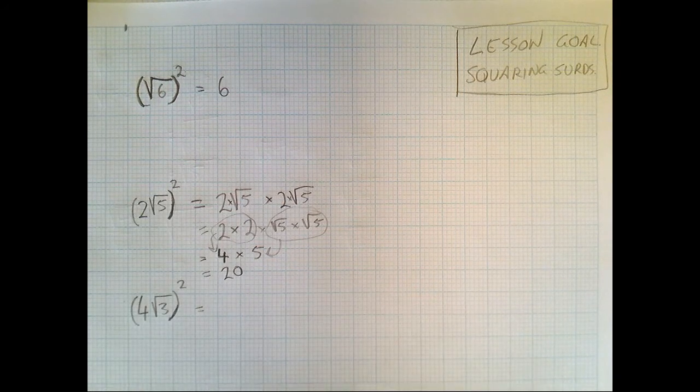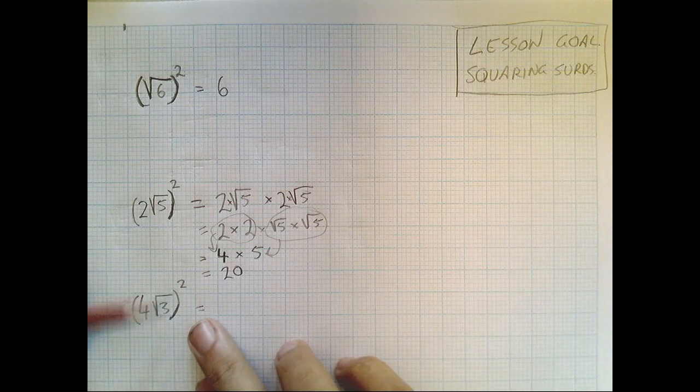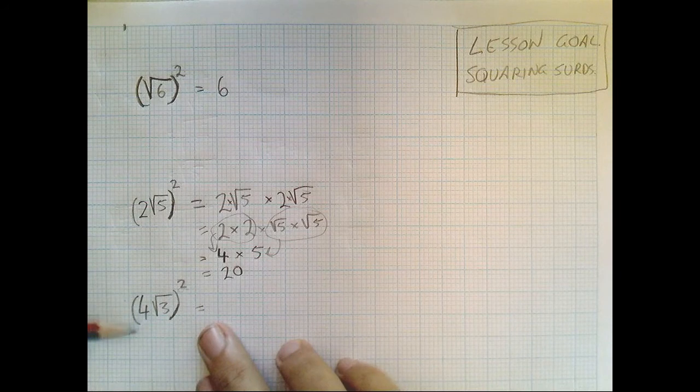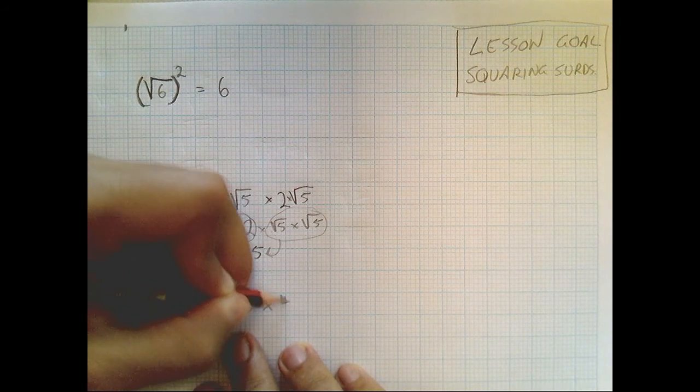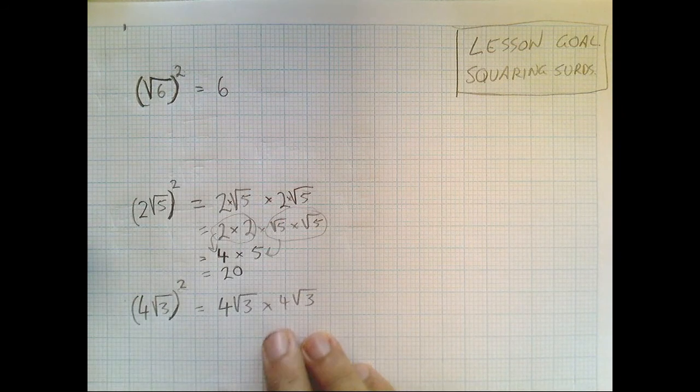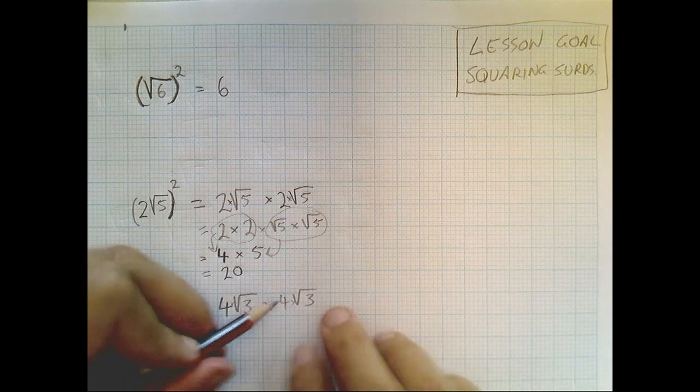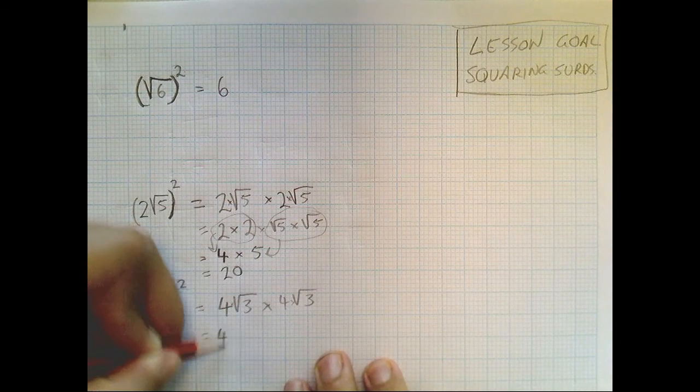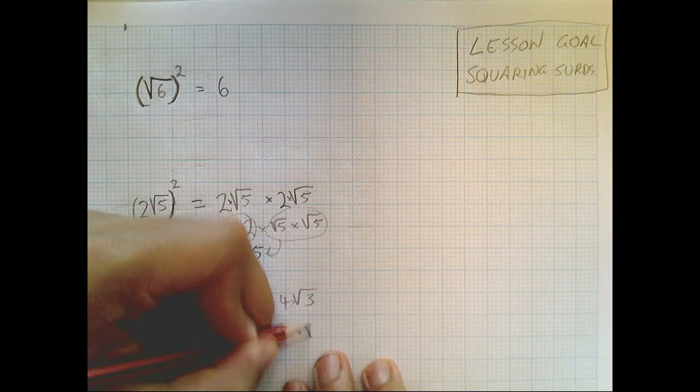Okay, I know that's a bit complicated, so I'll do one more so we can see how it works. Four root three squared. Now remember that can be rewritten as four root three times four root three. Now remember multiplication we can do in any order. So I'm going to put the fours together, and I'm going to put the root threes together. Four times four times root three times root three.